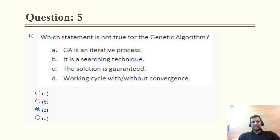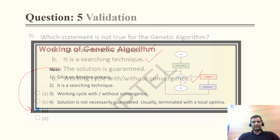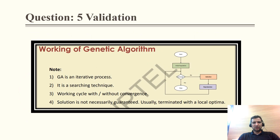Question 5: Which statement is not true for genetic algorithm? Genetic algorithm is an iterative process — correct. It is a searching technique — definitely correct. Working cycle with or without convergence — absolutely correct. However, 'the solution is guaranteed' is not a correct statement; the solution may or may not be guaranteed. So the correct option is C.